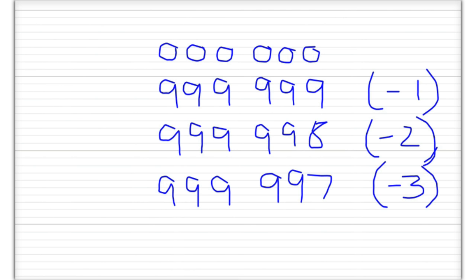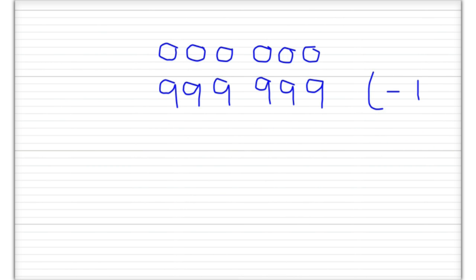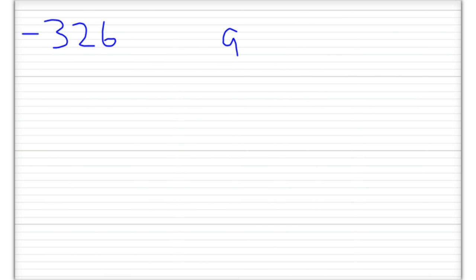That's how we get nines complement. To work out the tens complement, we add one to whatever we get with the nines complement. Let's look at an example — we want to represent minus 326 using nines and tens complement. For nines complement, we start with 9999999 and subtract 326, padding with zeros as needed.